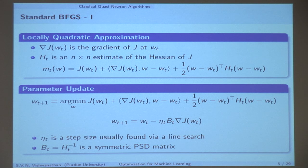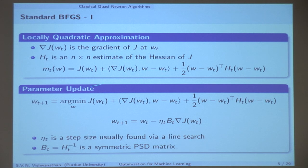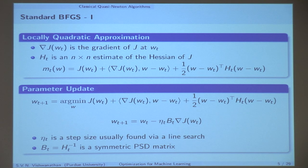The other condition says: after I take a step, if I evaluate this model at Wt+1, it should still be the case that the gradient I get out of this model matches the gradient of my true objective function. So if I evaluate the model at Wt+1, the gradient I get should equal the gradient of J at Wt+1. To ensure that condition, let me actually write this down.